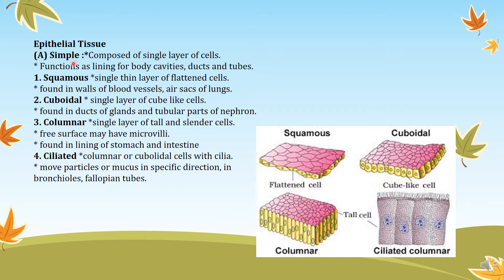Simple epithelial tissue can be further categorized into four types based on shape and function: squamous epithelial tissue, cuboidal epithelial, columnar, and ciliated. Squamous epithelial tissue, present in our buccal cavity, has irregularly shaped cells with centrally located nuclei; they are flattened and thinner in structure — a single thin layer of flattened cells found in the walls of blood vessels and air sacs of the lungs. Cuboidal epithelial tissue is a single layer of cube-like cells found in the ducts of glands and the tubular parts of the nephron. The nephrons — the excretory units of the kidneys — are made up of cuboidal epithelial tissue, which helps in easy absorption and secretion.